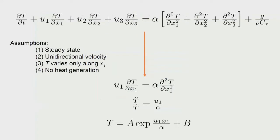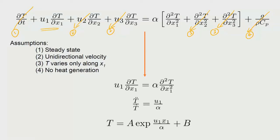We write the governing equation and apply assumptions: steady state, unidirectional velocity along x₁ (so u₂ and u₃ are zero), temperature varying only along x₁, and no heat generation. This leaves only two terms: the advective term u₁ ∂T/∂x₁ and the diffusion term ∂²T/∂x₁². Using T-dot and T-double-dot notation, the equation simplifies to (1/T-dot) d(T-dot)/dx equals u₁/α.